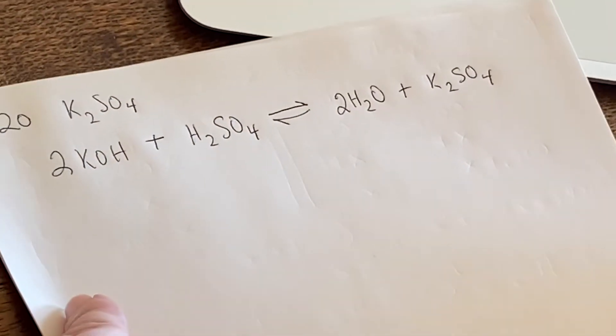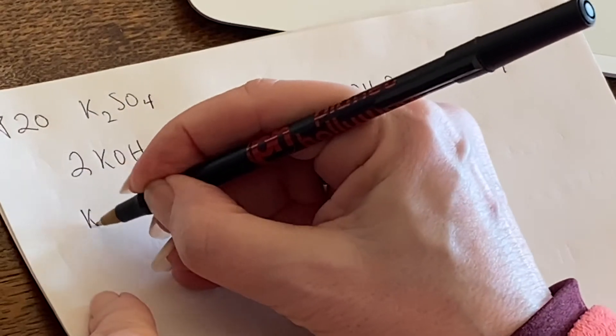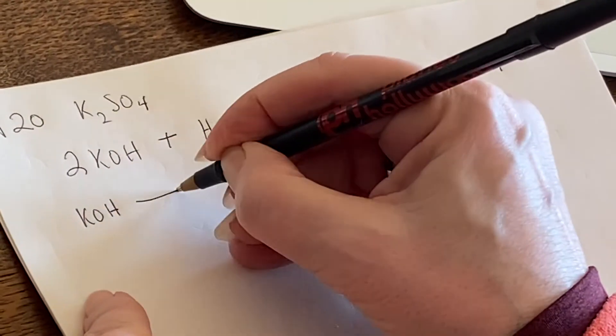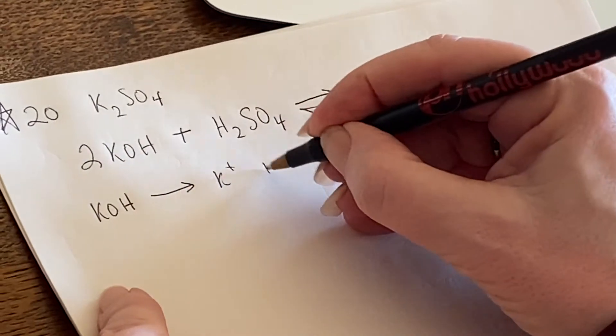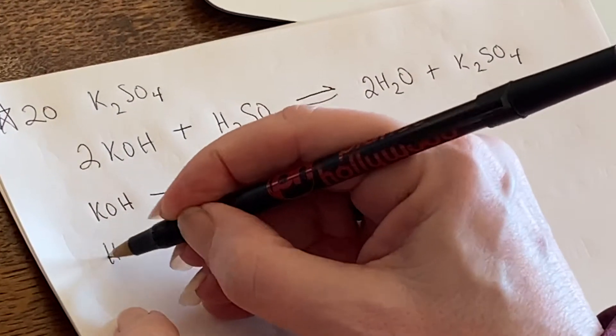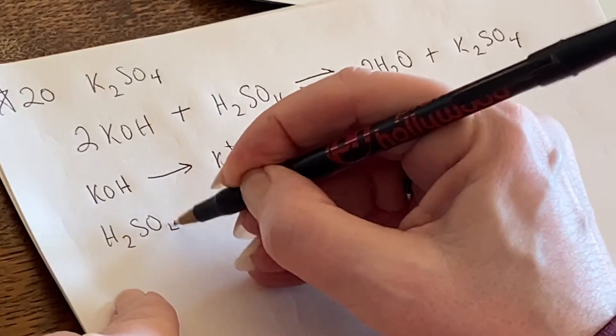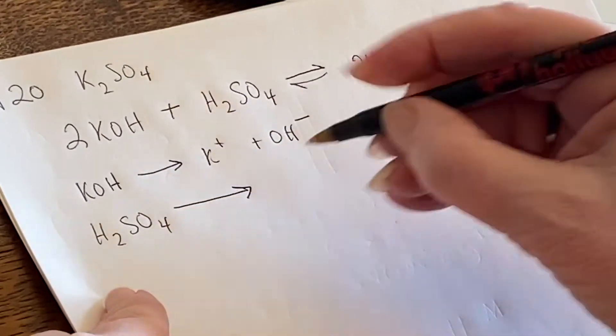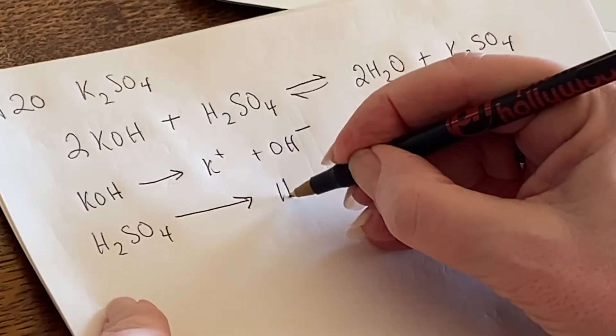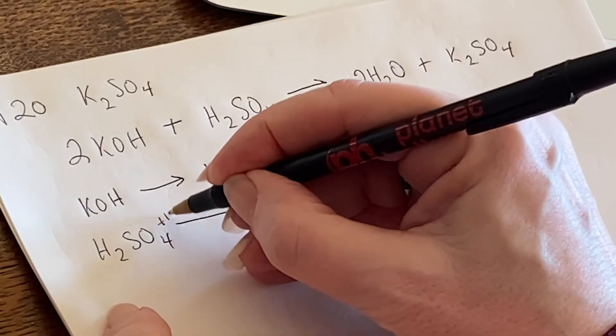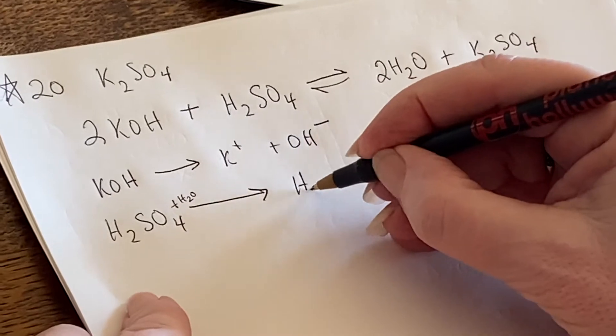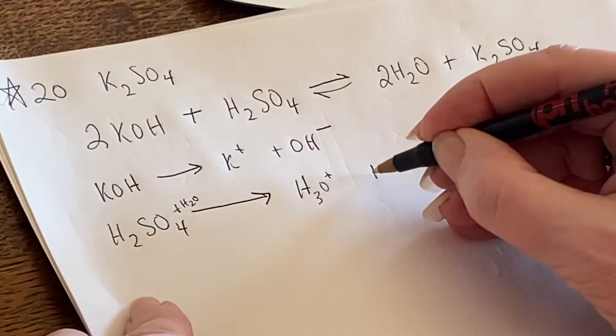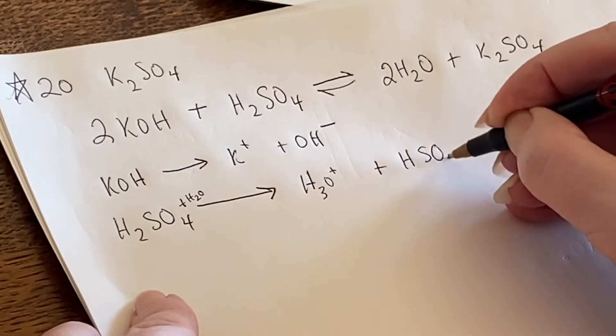And when you're taking KOH apart, it does simply fall apart into K plus and OH minus. But if you take H2SO4 and you try to make it fall apart, I'm putting water in it, so hydronium ion and HSO4 minus.